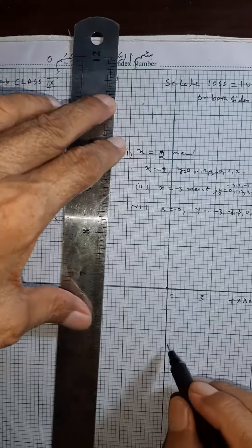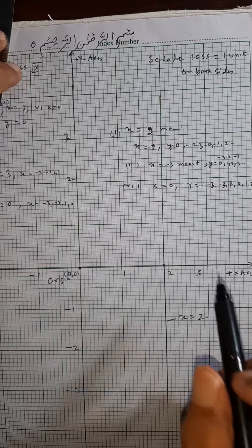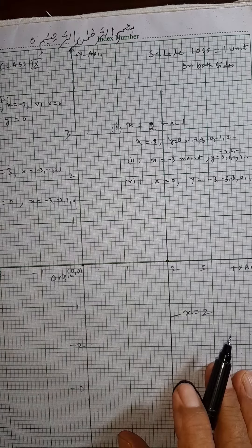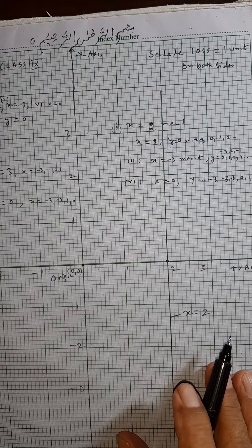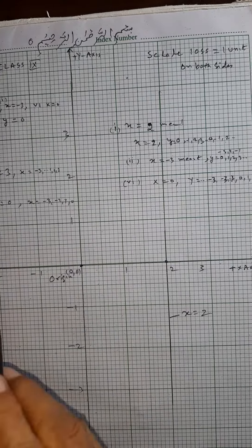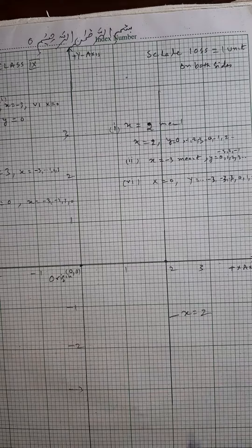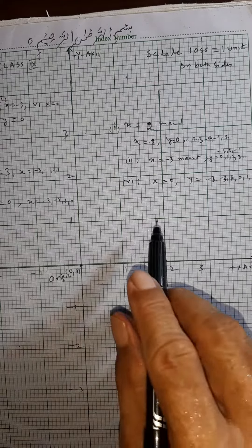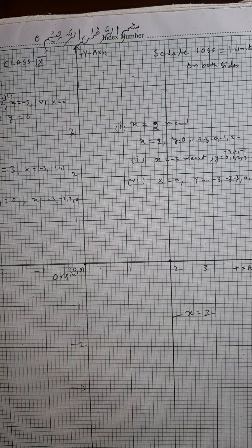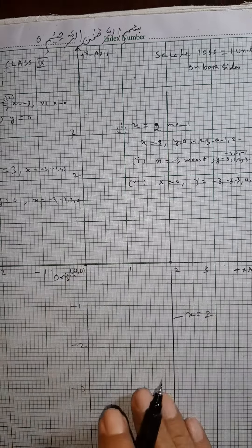This is the line x is equal to two and the line x is equal to minus three will be here. X is equal to minus three, x is equal to two, and x is equal to zero — this value is zero.